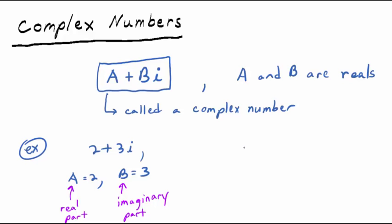Another example: 3.1 minus pi times I. That's a complex number. A is 3.1, and B — you'd have to include the negative, just like coefficients in polynomials — is negative pi. Don't round off, just negative pi.